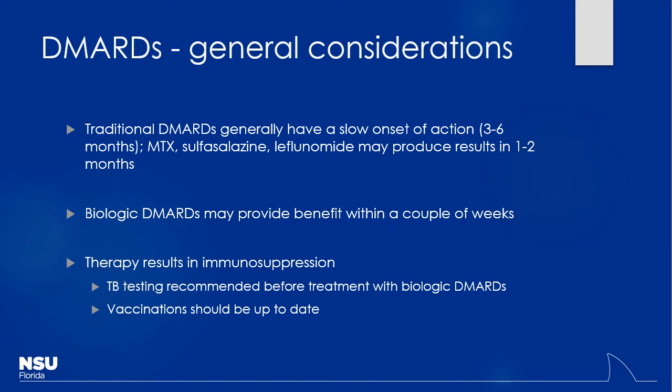You may need multiple DMARDs together — we'll talk about rational use of those combinations. Most patients are probably going to start out on methotrexate — it has the best long-term data and it's a good backbone if you're going to use a multiple drug regimen. The traditional DMARDs typically have a slower onset — three to six months before you really see full effect. Methotrexate, sulfasalazine, and leflunomide may produce a little faster effects — usually about one to two months. The biologics are much, much faster — usually within a few weeks.